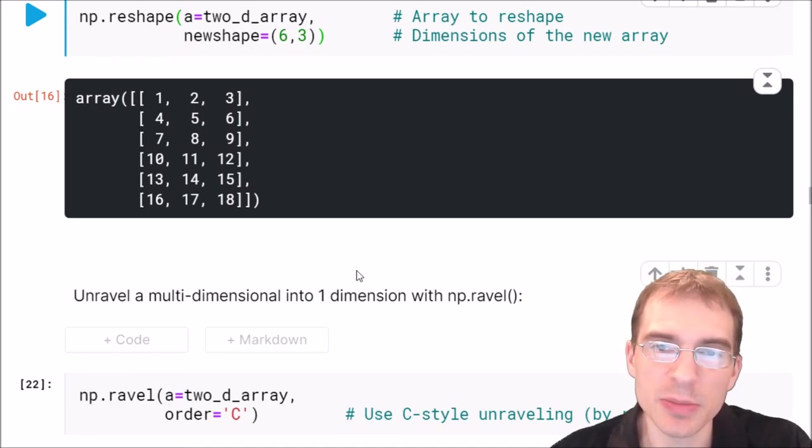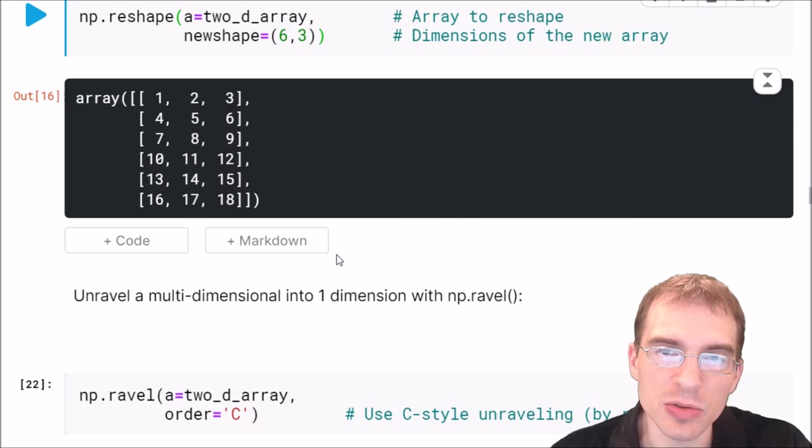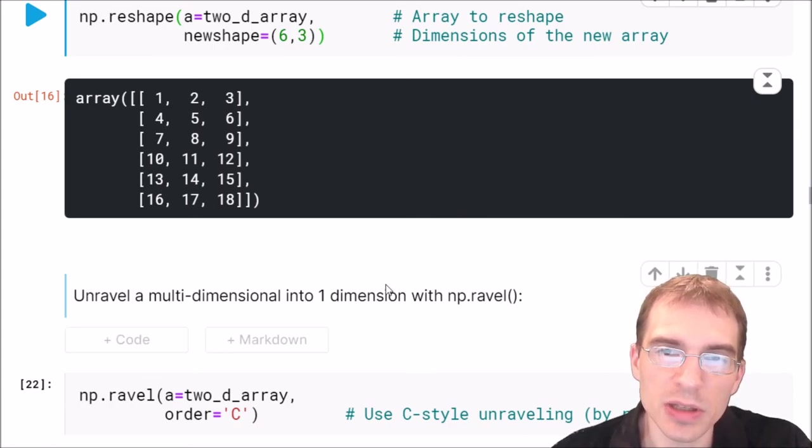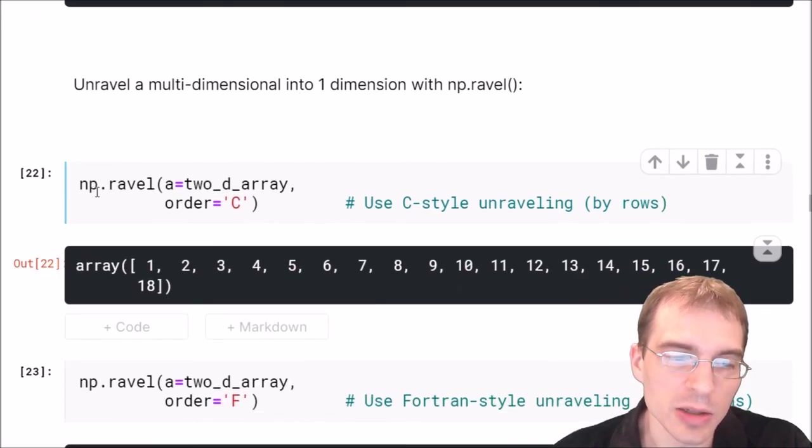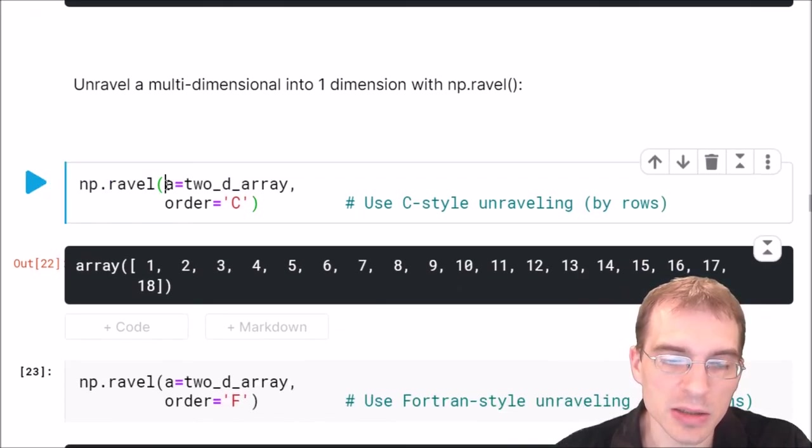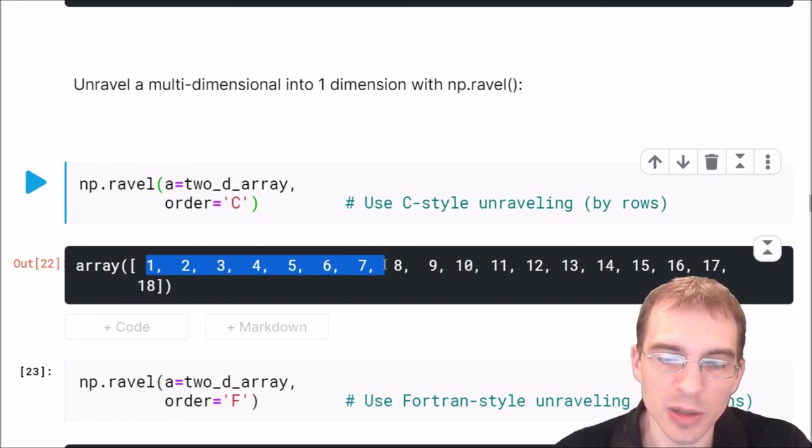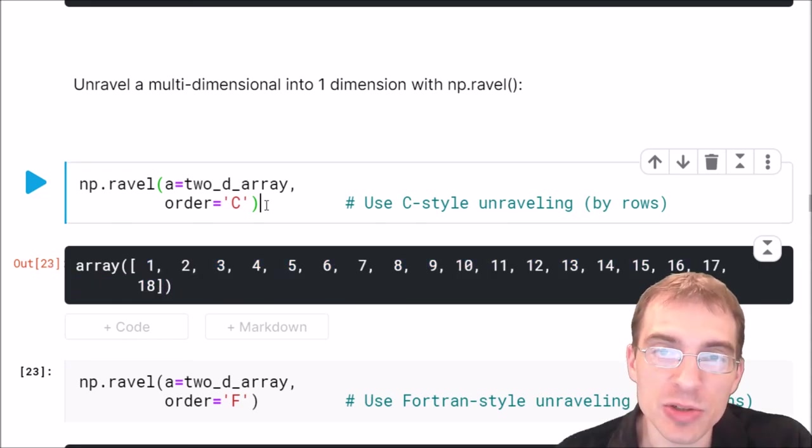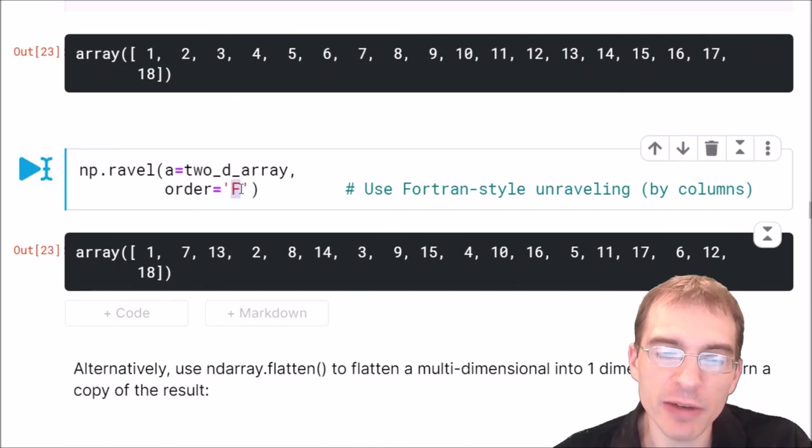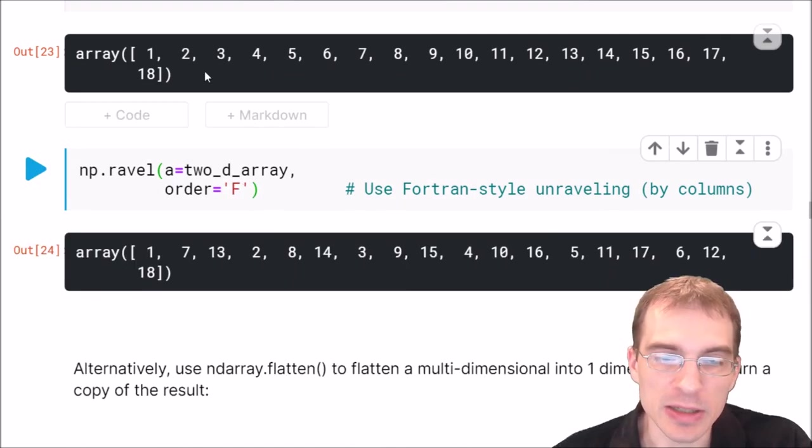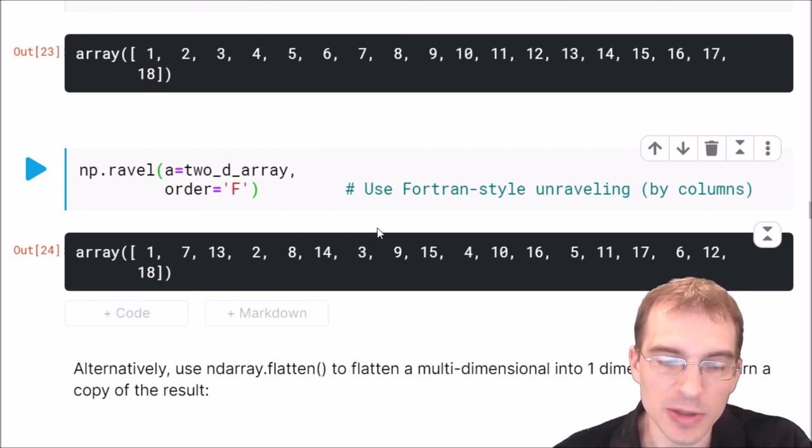You can also take a multi dimensional array and unravel it into a one dimensional version of itself with the dot ravel method. We're going to pass in the array we want to unravel, that's our 2D array again. Then you use this extra argument order to specify how you want to unravel it. In this case, we want to unravel by the rows because our numbers were in ascending order by row. If you want to unravel by columns instead, you just set order to F, which is Fortran style unraveling. I'm not exactly sure why it's C and Fortran style. I do not know those languages very well, but that is the arguments you need.